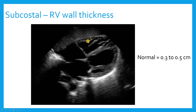The subcostal view can be used to measure right ventricular wall thickness. This is most helpful for understanding the chronicity of right ventricular failure. So if somebody has a thin right ventricle — which normally measures 0.3 to 0.5 centimeters — and they have very significant evidence of pulmonary hypertension, then you are dealing with an acute cor pulmonale syndrome and not a chronic disorder.